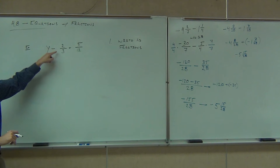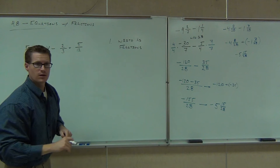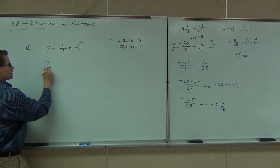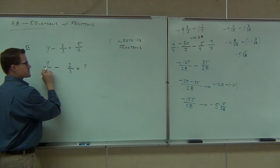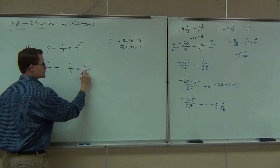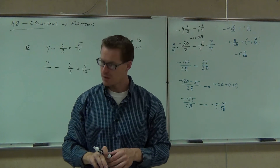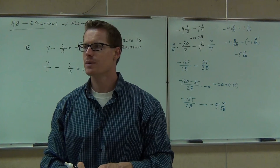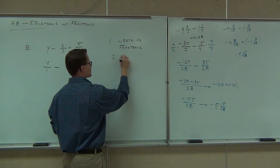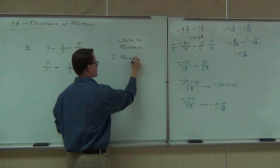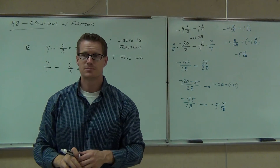For instance, two-thirds is a fraction. Five over twelve is a fraction. If something isn't a fraction, make it one. Leave yourself some space between these values. Do you remember how to do LCD? Your next step is to find the LCD.